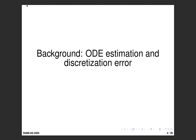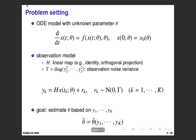Now I talk about the background of ODE estimation and discretization error. We suppose we have an ODE model with unknown parameter theta. Theta may be an initial state or some system parameter, or in general both. For the data, we assume an observation model where y_k is generated by a linear map H plus Gaussian observation noise with covariance gamma. We consider estimation of theta based on observation data y_1 to y_K.